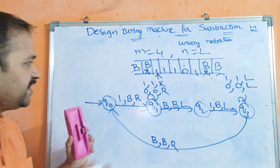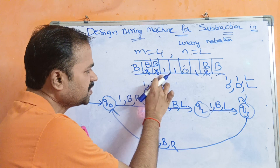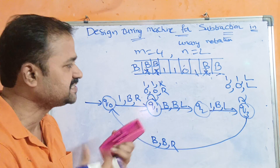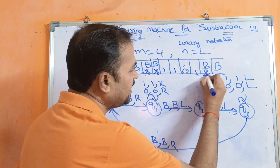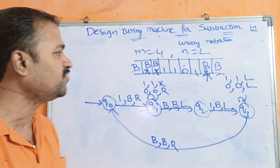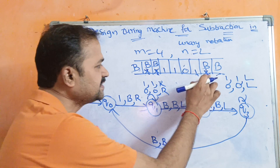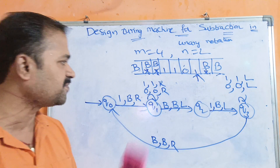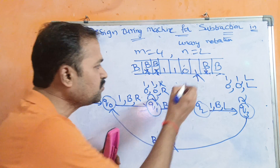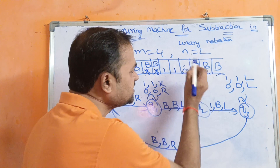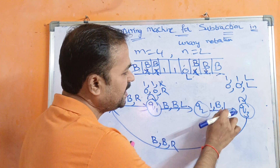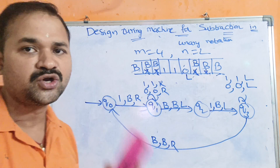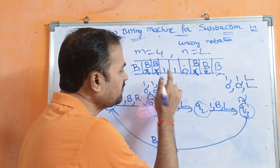Back at q0, we read the next one, replace it with a blank symbol, and move the head right. On q1, ones and zeros are unchanged as we move right. We reach the blank symbol at the end and move the head left (still on q1). The second symbol from the right is one, so we replace it with blank and move left into q3.